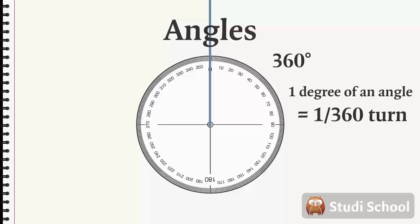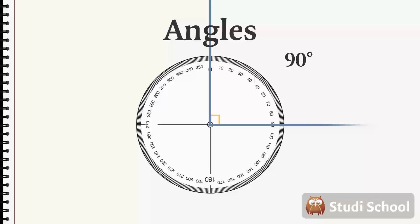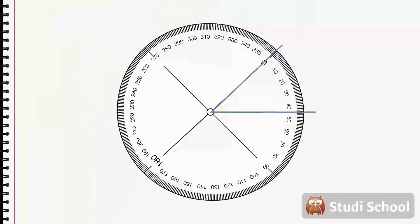A degree of an angle is 1/360th of a full turn. Since a full turn is 360 degrees, half a turn is 180 degrees. A quarter of a turn is half of one half turn, 90 degrees. And three quarters of a turn is three quarters of 360, which is 270 degrees.